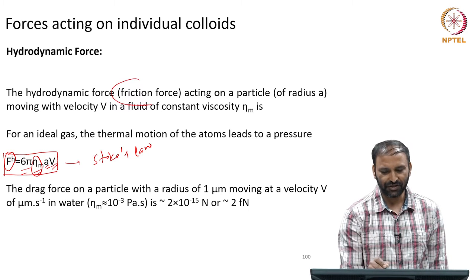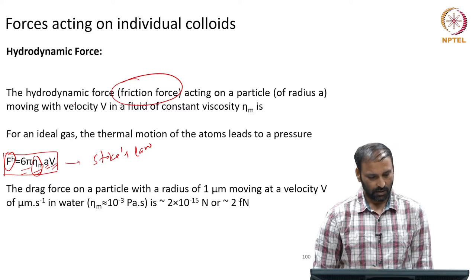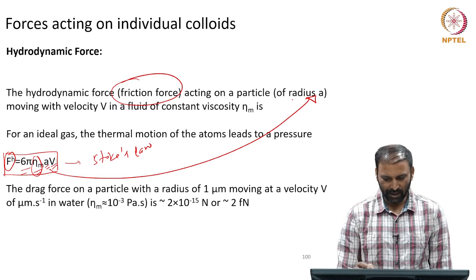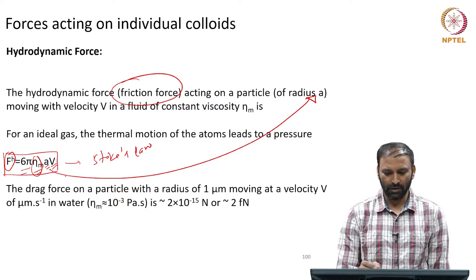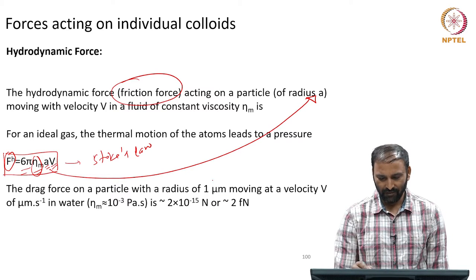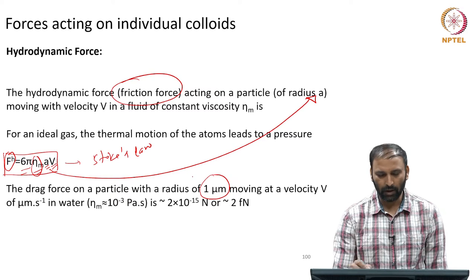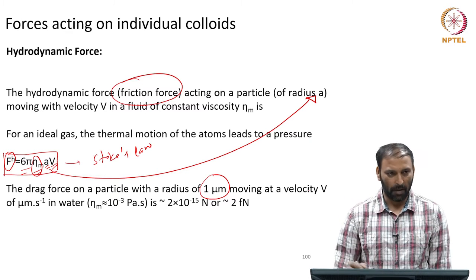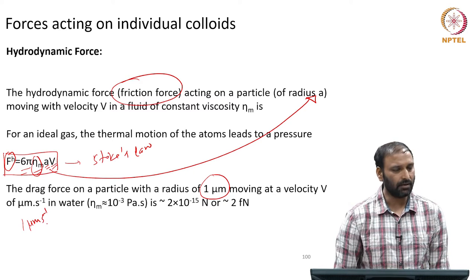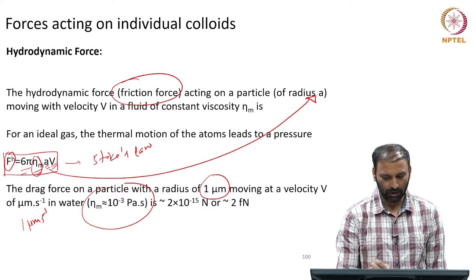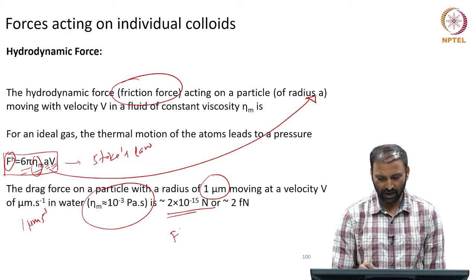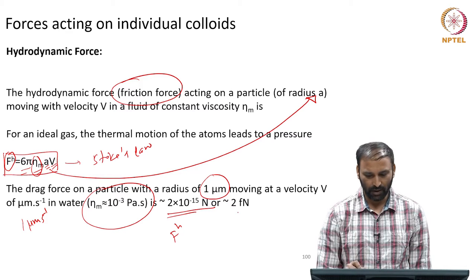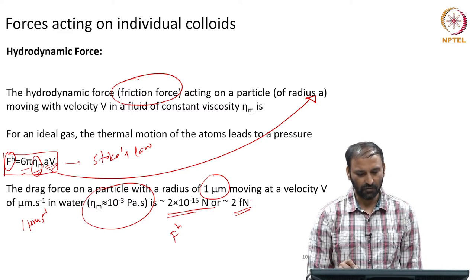People also call this a friction force, where a is the radius of the particle. For typical experimental numbers: if you have a 1 micrometer radius particle moving at about 1 micrometer per second in water, the hydrodynamic force F_h is of the order of 2×10⁻¹⁵ newtons, which is 2 femtonewtons.